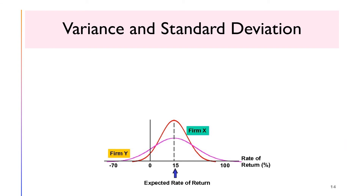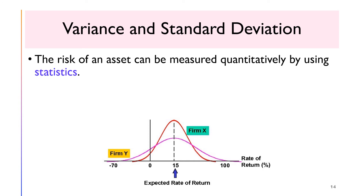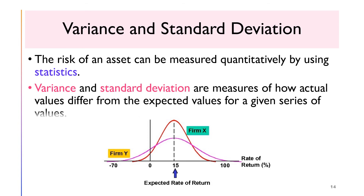Investments whose returns are more uncertain are generally viewed as being riskier. Risk plays a key role in the decision-making processes of both investors and companies, so it is important that the risk associated with an investment can be quantified. The risk of an asset can be measured quantitatively using statistics. The most common statistical measures used to describe investment risk are its variance and standard deviation. Variance and standard deviation measure how actual values differ from the expected values for a given series of values.